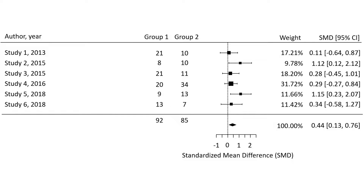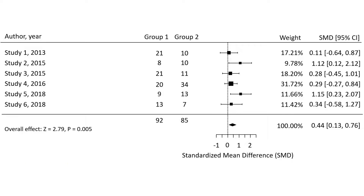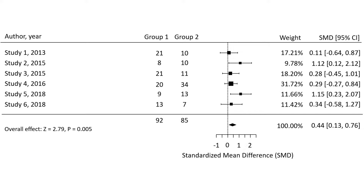After performing the meta-analysis, the summary effect is calculated. In this example the summary effect is 0.44 and the 95% confidence intervals are 0.13 and 0.76. Since the confidence intervals do not cross the line of no effect, we can conclude that the overall effect is significant. Since the effect sizes are standardized mean difference values, the Z statistic is reported, which is used to determine the p-value for hypothesis testing. In this case the p-value is 0.005, which is lower than the alpha level of 0.05, so the summary effect is statistically significant.